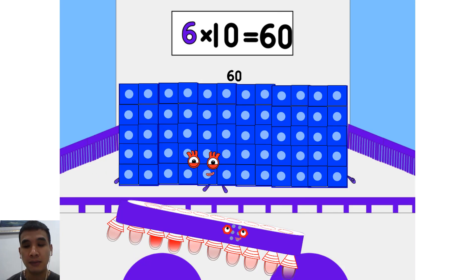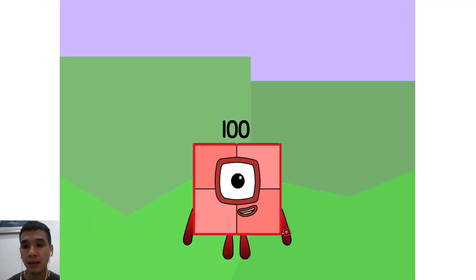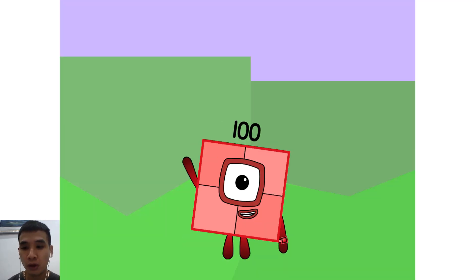Seven fives are thirty-five. Eight fives are forty. Nine fives are forty-five. Here's a net big superstar. Ten fives are fifteen. Fifteen!